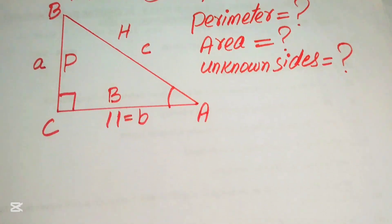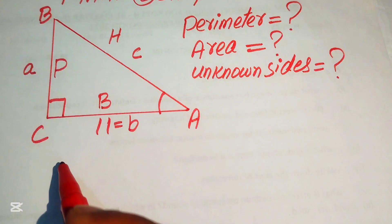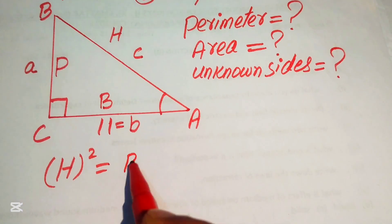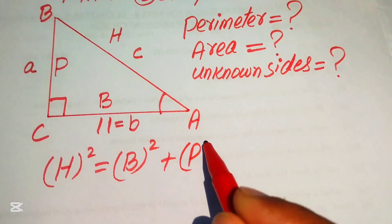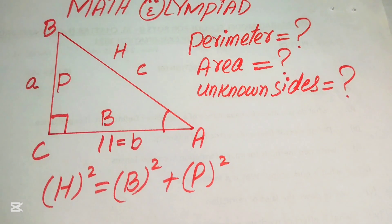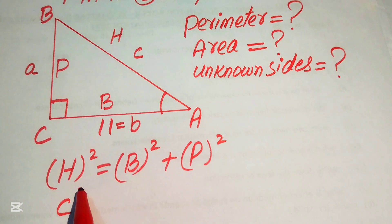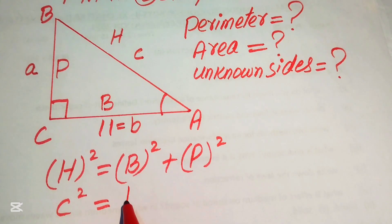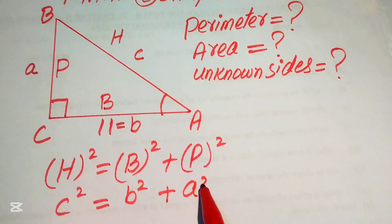We also know that the Pythagorean theorem holds for this type of triangle. The Pythagorean theorem states that hypotenuse squared equals base squared plus perpendicular squared. Here, the hypotenuse is small c, the base is small b, and the perpendicular is small a, so: c² = b² + a².